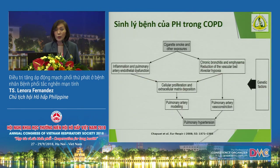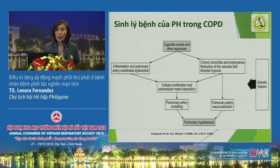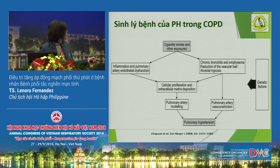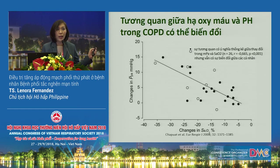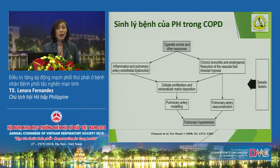Why do they develop pulmonary hypertension? Our usual mechanism would be alveolar hypoxia. If there is hypoxemia, we believe that is the main cause for pulmonary hypertension in COPD. But this diagram shows many other mechanisms — hypoxia blocks potassium channels, but cigarette smoking by itself can cause a lot of inflammation and trigger chronic pulmonary hypertension.